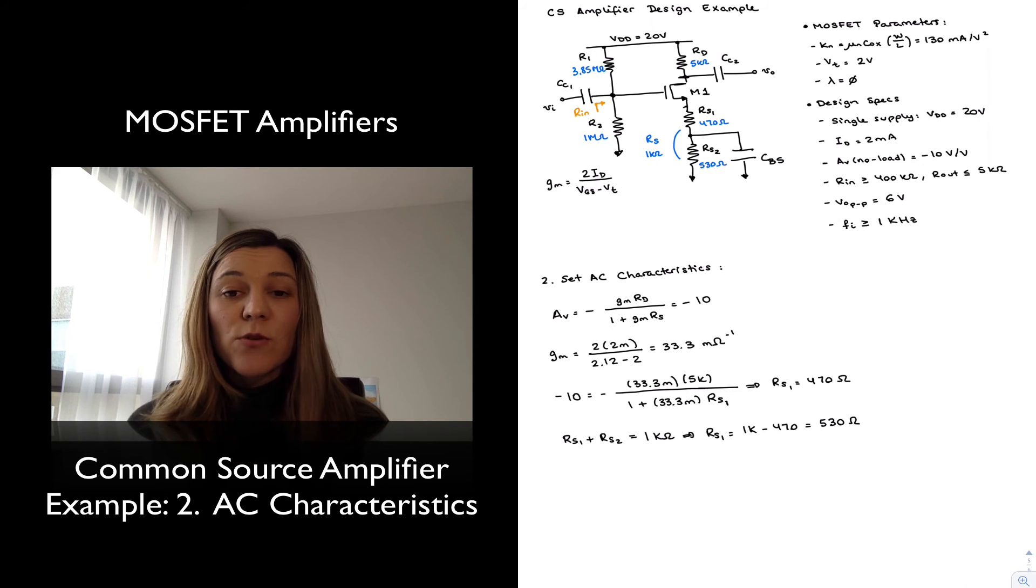Sum of the two is still 1k, so I keep the same DC bias point, but now I have a larger AC gain, because I am partially bypassing the source resistance.